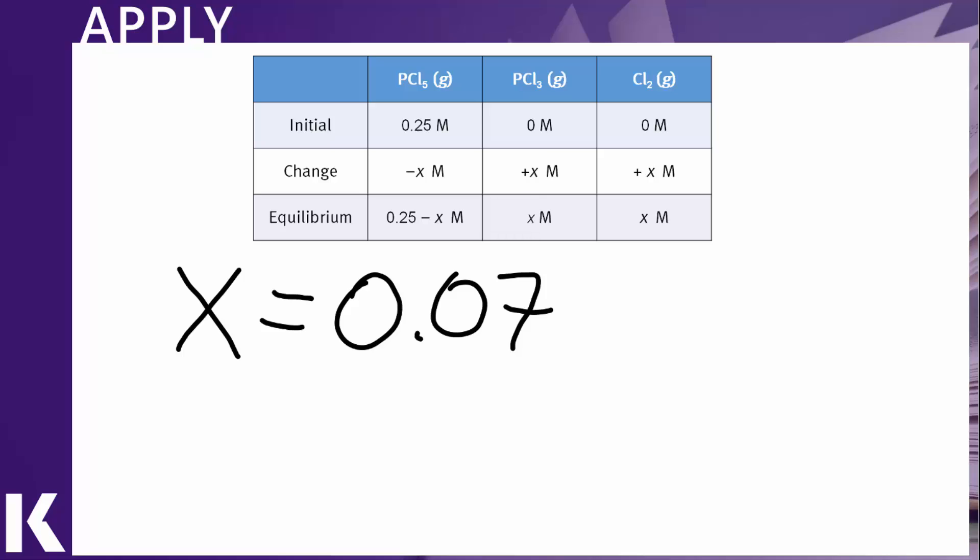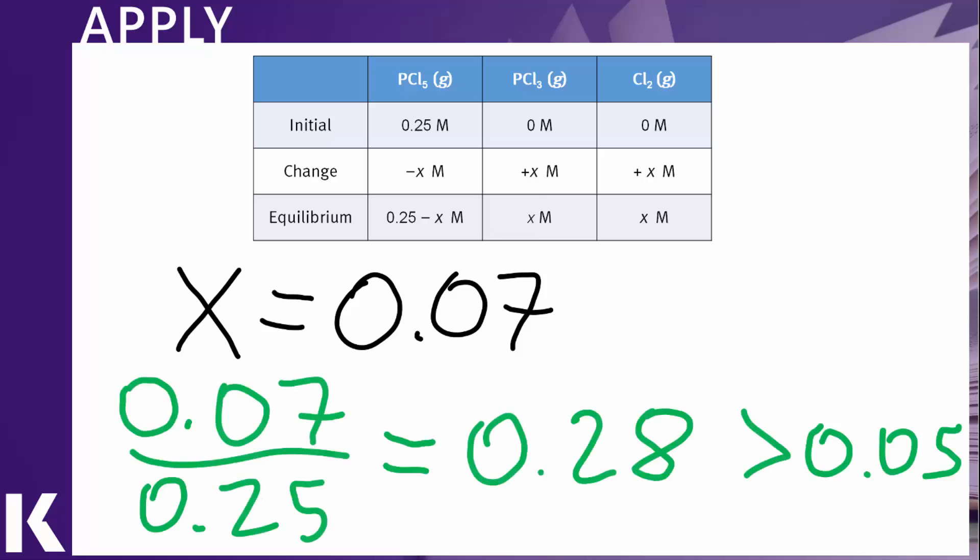Our last check then is to compare this value of 0.07 to our initial starting concentration. However, when we do that, we see that the 0.07 molar concentration of products is more than 5% of the concentration of the reactants at the beginning. Therefore, here we cannot use the simplification process and we must in fact go back and use the quadratic form.